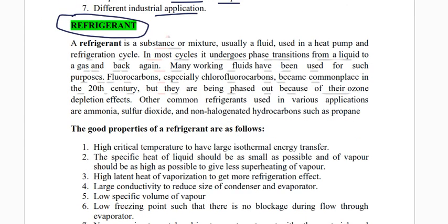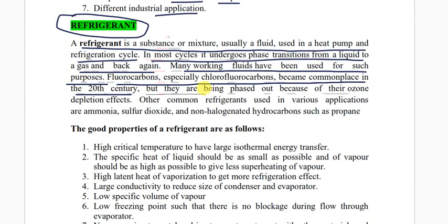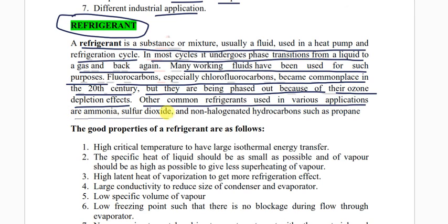A refrigerant is a substance or mixture, usually a fluid, used in a heat pump or refrigeration cycle. In most cycles it undergoes a phase transition from liquid to gas and back again. Many working fluids have been used for this purpose, such as fluorocarbons — especially chlorofluorocarbons — which became commonplace in the 20th century, but are being phased out due to their ozone depletion effect. Other common refrigerants include ammonia, sulphur dioxide, and non-halogenated hydrocarbons such as propane.